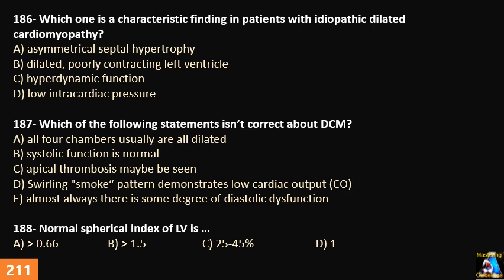Question 186 continued: Which of the following is a characteristic finding in a patient with idiopathic dilated cardiomyopathy? A) asymmetrical septal hypertrophy, B) dilated, poorly contracting ventricle, C) hyperdynamic function, or D) low intracardiac pressure. Question 187: Which one of the following statements is NOT correct about dilated cardiomyopathy?